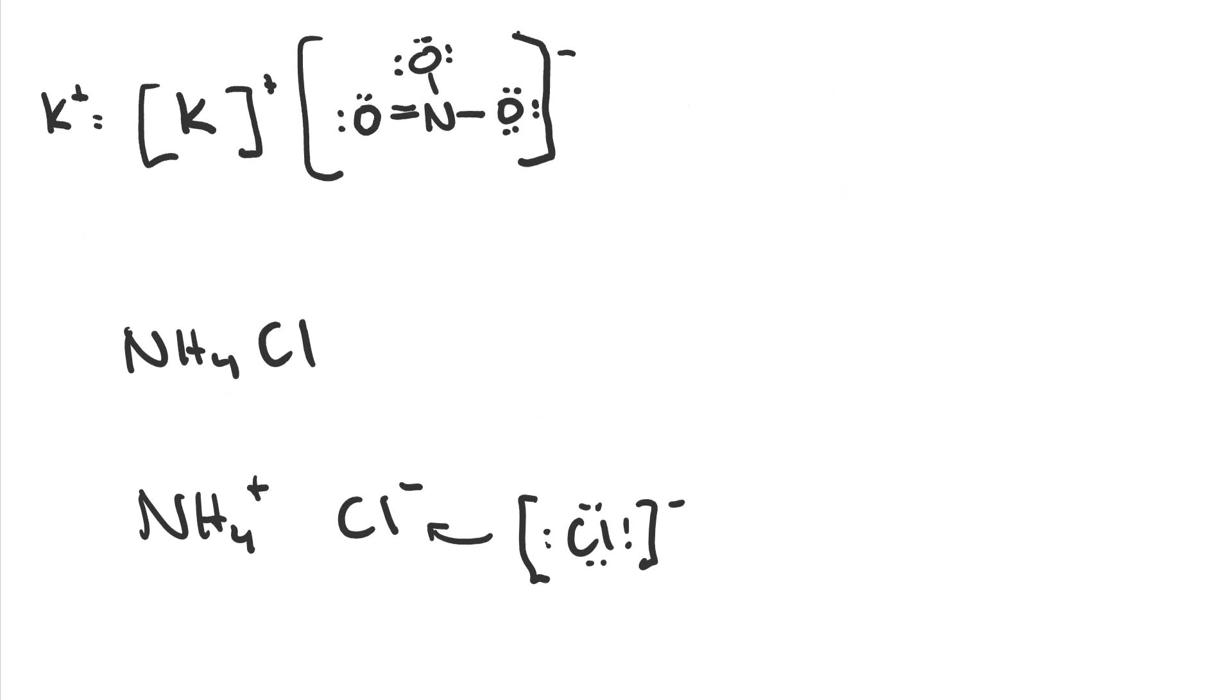NH4Cl consists of an NH4 plus polyatomic cation and a Cl minus anion. We do the easy one first, the Cl minus. That's just a Cl with eight dots in brackets and a negative one charge. Because chlorine is in group 17, so it had seven valence electrons, we added one to make the negative charge. Now it's eight.